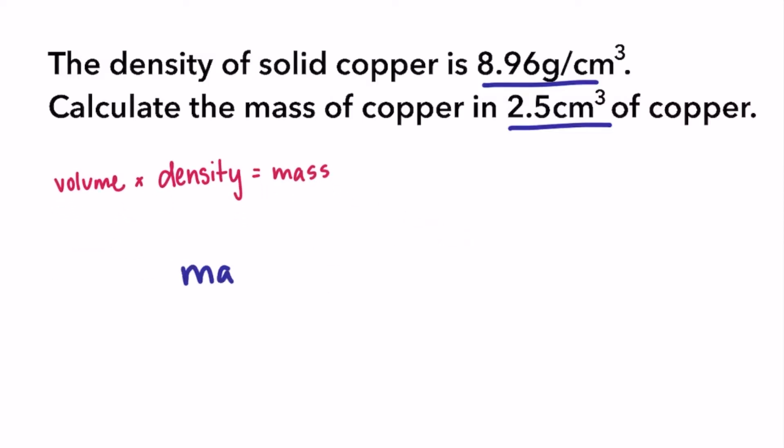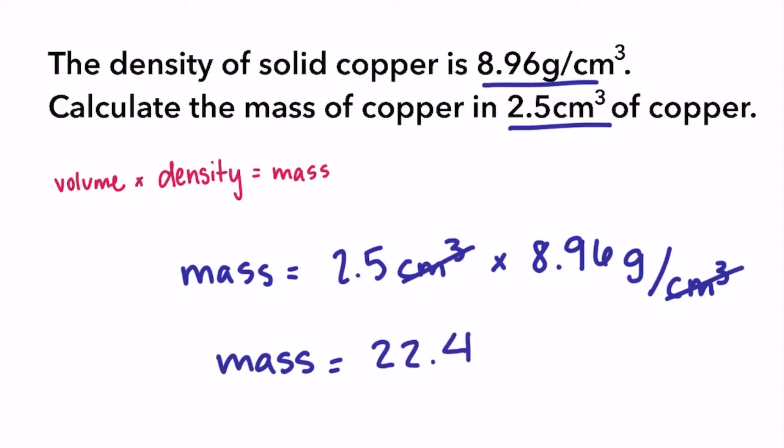Then we can substitute our values in for density and volume and multiply 2.5 cubic centimeters by 8.96 grams per cubic centimeter. The cubic centimeter cancels out and our answer is 22.4 grams. Rounded to two sig figs is 22 grams.